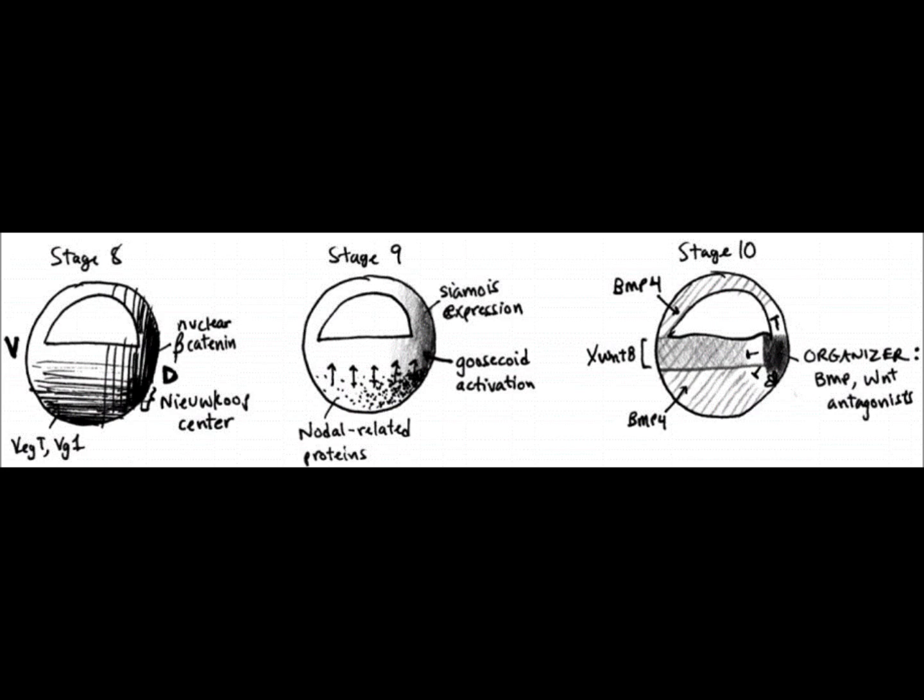In the early embryo before gastrulation, the specification of the organizer requires the Wnt pathway to stabilize beta-catenin. But after the mid-blastula stage when the organizer has already been specified, the zygotic expression of Wnt proteins, in this case Xwnt8, is used to specify ventral mesoderm. To ensure the proper development of dorsal mesoderm, the organizer secretes Wnt and BMP antagonists. In Xenopus development, the Wnt pathway is used to solve problems of specification in multiple different situations and at multiple different times.